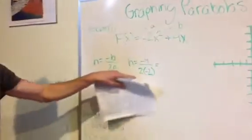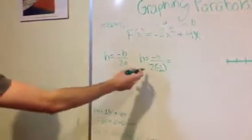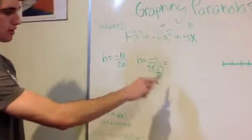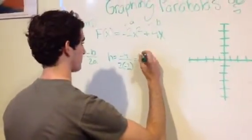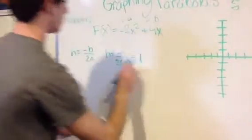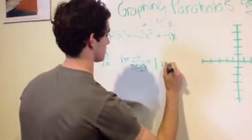This right here, negative 4, and we all know 2 times negative 2 is negative 4. So negative 4 over negative 4 equals 1. So h equals 1.